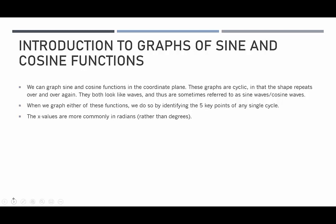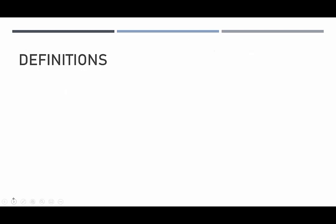When we graph either of these functions, typically we do so by identifying five key points of any single cycle. Remember, one cycle is from start to finish going back to where we started. The x-values are more commonly in radians for these graphs rather than degrees, but it could be either way.